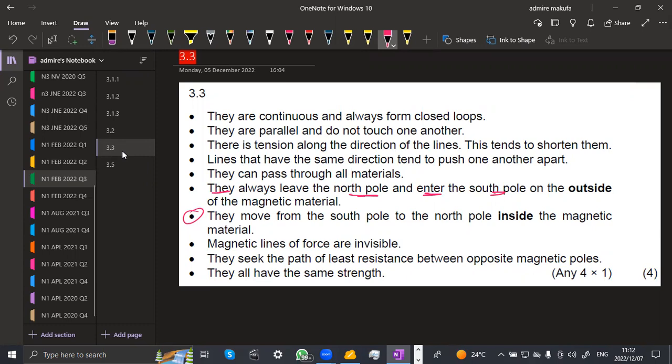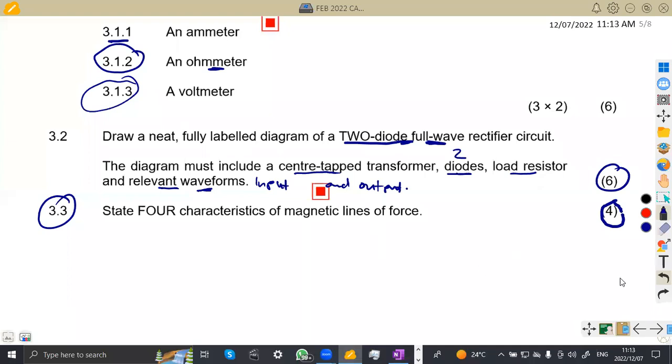And also the magnetic lines, of course, they are invisible. They seek the path of the least resistance between opposite magnetic poles. And they also have the same strength. So any from these guys, you're supposed to just mention any four and you'll be able to get those four marks that you see there. That was 3.3 of the question.